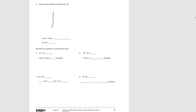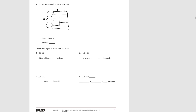Let's draw an area model again for number 4. 50 is 5 tens, and 20 is 2 tens. If we count all together, we have 10 hundreds — writing it in unit form. And 10 hundreds would be 1,000.